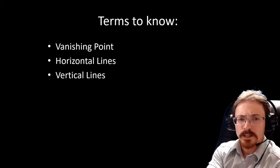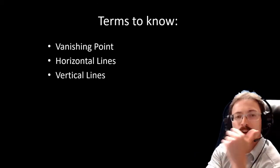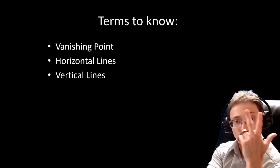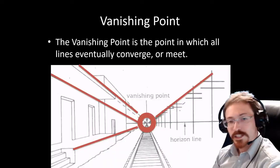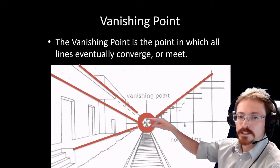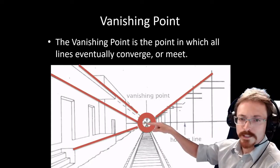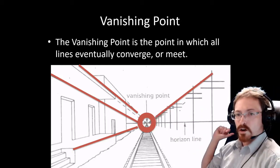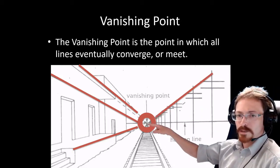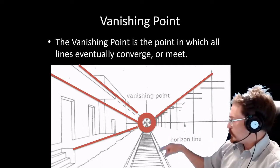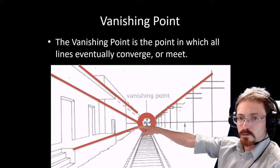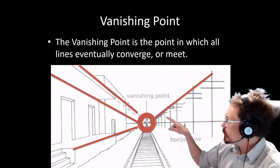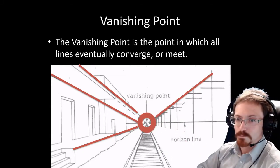The terms we want to look at today are vanishing point, horizontal lines, and vertical lines. The vanishing point is where all lines eventually meet. If you draw a line straight through, connecting all of these things, they will all meet right there — just like the railroad tracks, the lines on the walls, the ceiling, and the telephone poles all meet right there at the vanishing point.